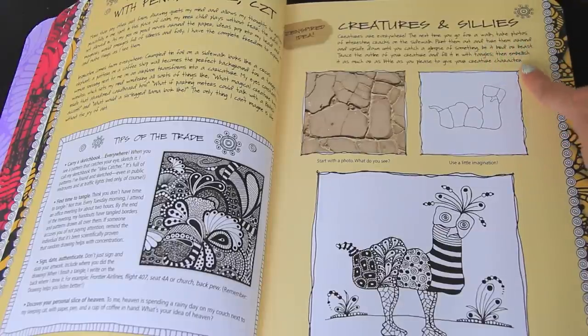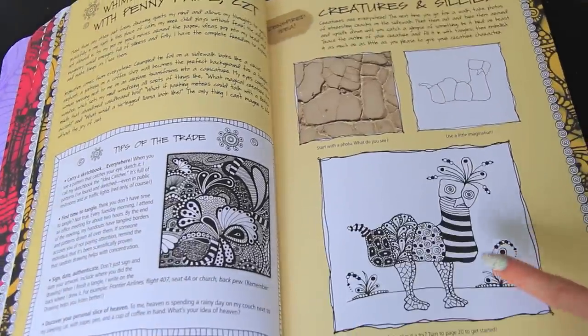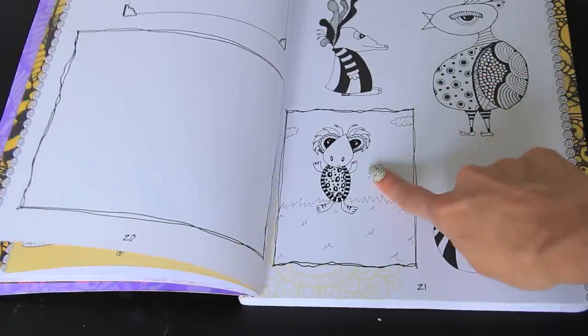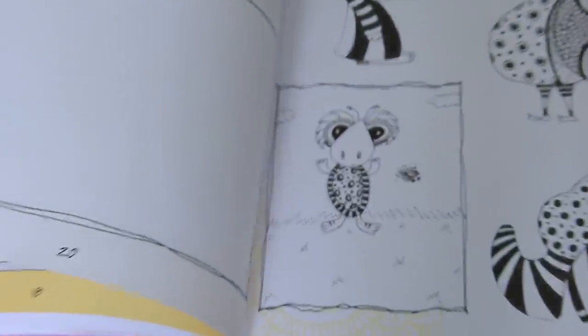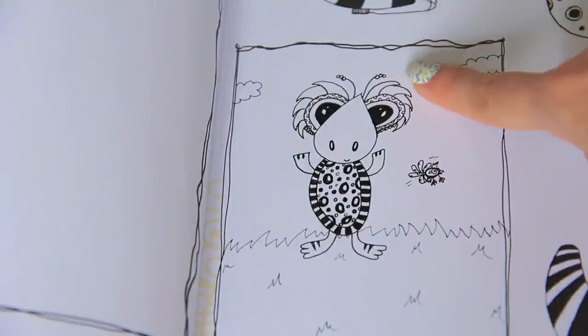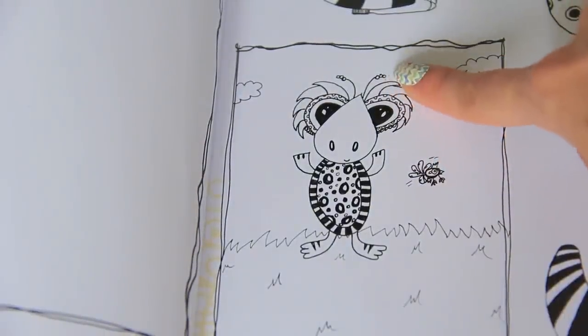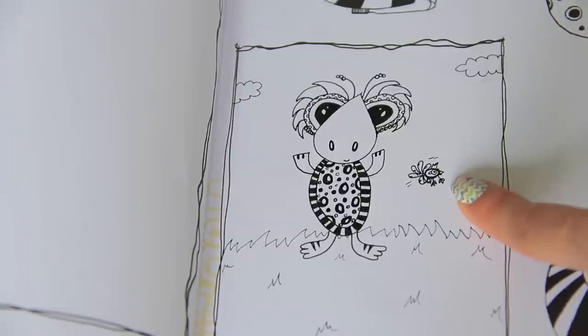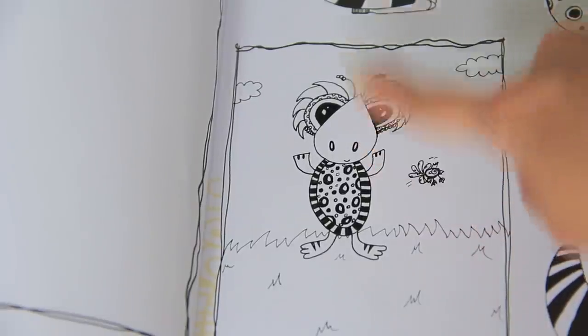The next page is going to be creatures and sillies, which is this guy right here. I did draw my own silly. I'm going to zoom in on him. My favorite part is the spiky fur that comes out around his eyes and the little antenna. I also drew a tiny bird and I named him Herman by the way, this guy.